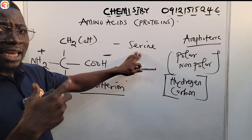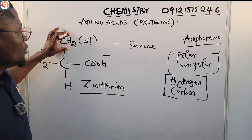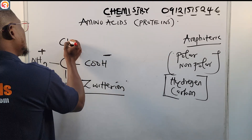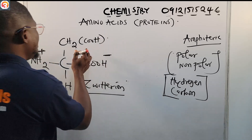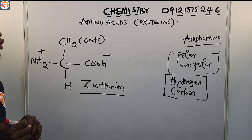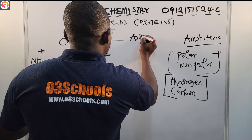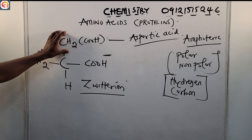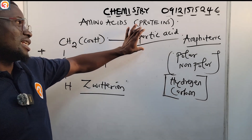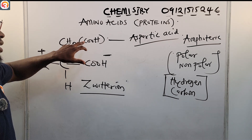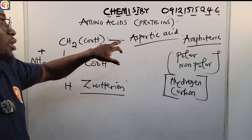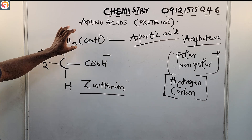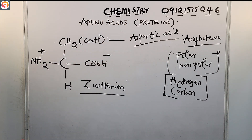If the R group is CH2COOH, the amino acid is called aspartic acid. It is polar because it is also bonded to oxygen. This is an acidic amino acid — its R group is CH2COOH.